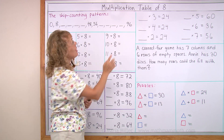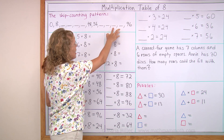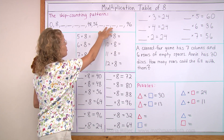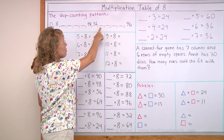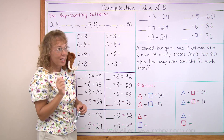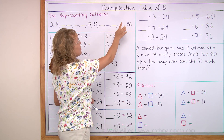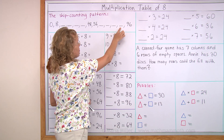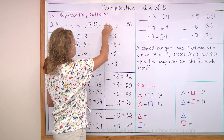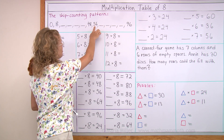And then backwards: 96, 88, 80, 72, 64, and 56. Now you try it: 96 ... and 56.